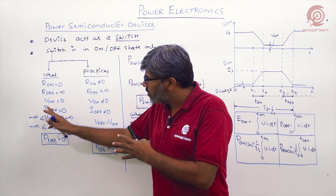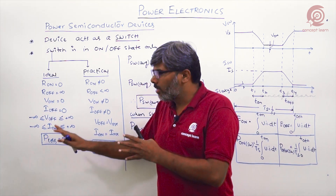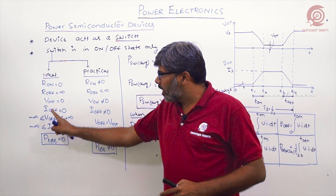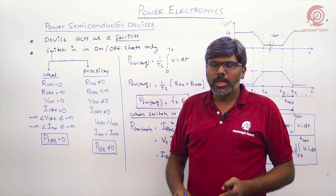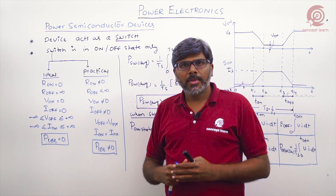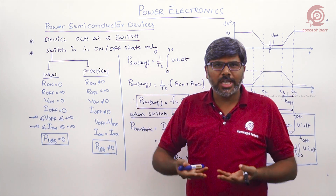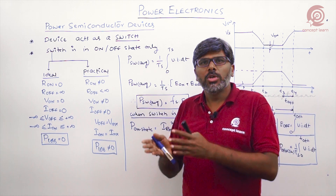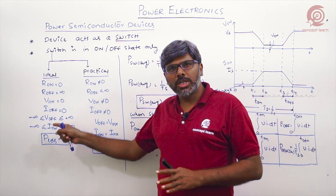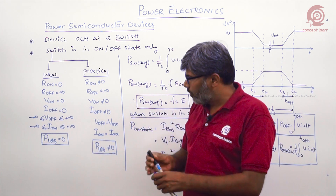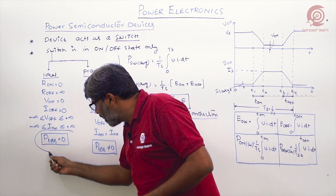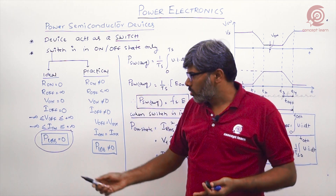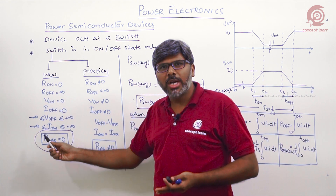During the off state, current is zero and voltage is infinite, but power loss is zero since P = V × I. During the on state, current is infinite but voltage is zero, so power loss is again zero. The ideal switch can take instantaneous action during turn-on and turn-off, so turn-on and turn-off times are zero, energy lost during switching transitions is zero, and total power loss is zero — making the ideal switch thermally stable at all operating conditions.